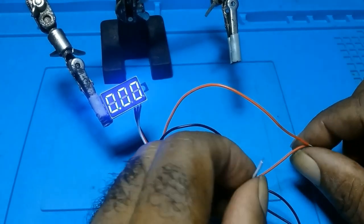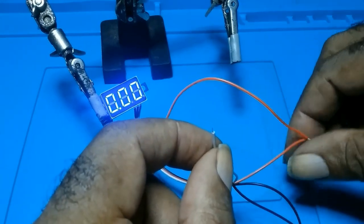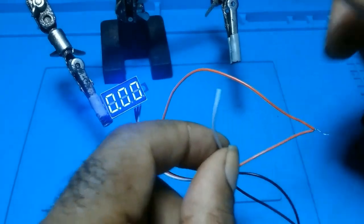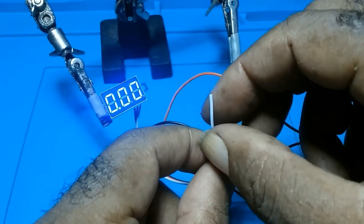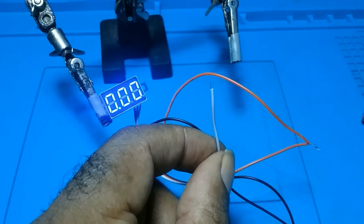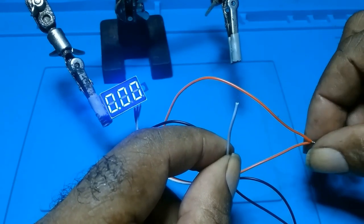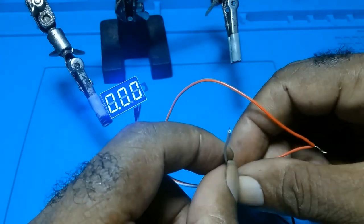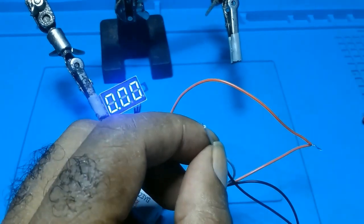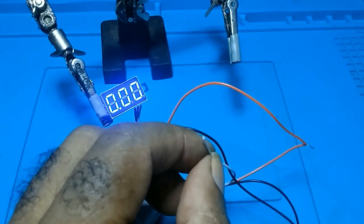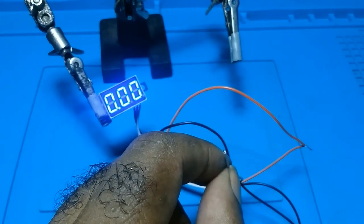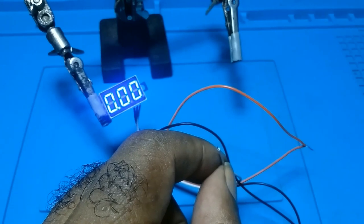This is it for now. Just remember: red to red, black to black. The white wire is the sense wire. Now, voltmeters have blue, green, whatever color. Apart from the red and black, the other odd color is your sense wire. If you find this video helpful, please like, subscribe, and click on the bell icon to be notified.